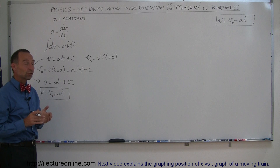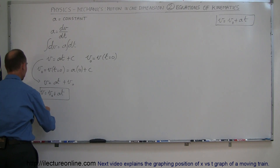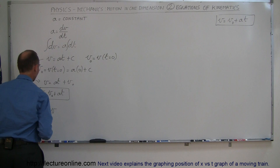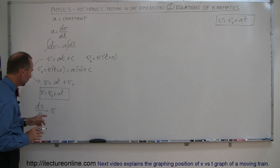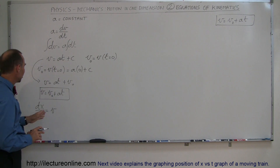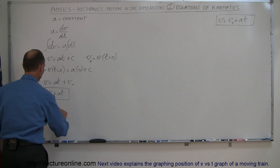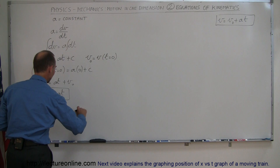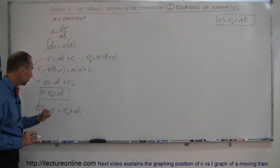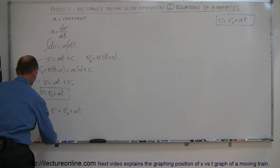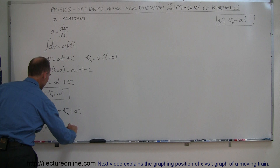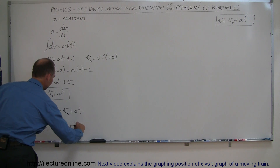Secondly, we write the definition of velocity: dx/dt equals velocity — the change in distance over time. Since velocity also equals v-naught plus at from our first equation, we can substitute, so dx/dt equals v-naught plus at. Moving the dt over to the other side, we get dx equals v-naught plus at times dt.